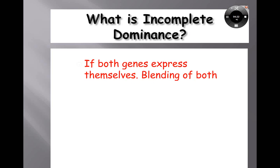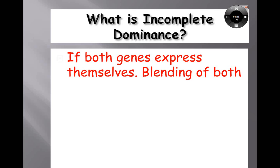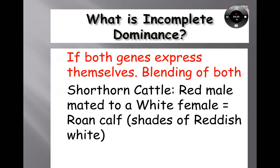Incomplete dominance. Incomplete dominance is when both genes are expressed at the same time — it's a blending of those features. In the example, a red short-horn cattle male mated with a white female produces a roan calf. The two colors give you a mixture — a red cow and a white cow give you shades of red. Or imagine one cow was all black and one was all white; if it's incomplete dominance, their children would come out forms of gray, because gray is a mixture of black and white.